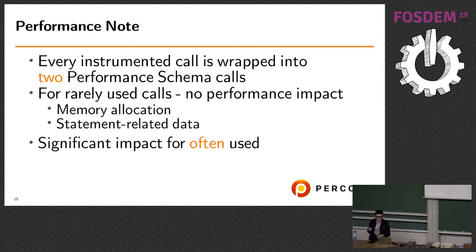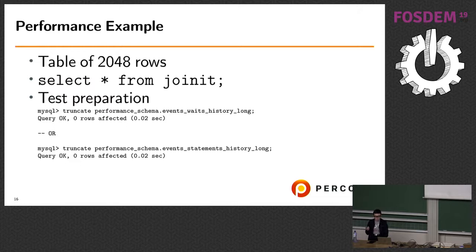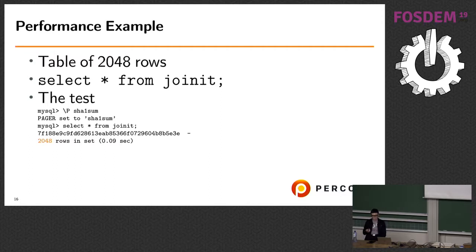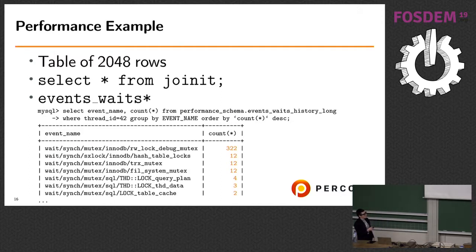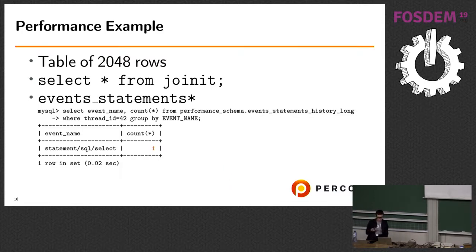For infrequently called operations like statements or memory allocation, the two low-level Performance Schema calls have almost no performance impact. But for high-frequency operations — like reading one million rows — the instrumentation code runs for every single row. For example, in a benchmark with a table of 2,000 rows, instrumenting events_waits shows very large numbers of instruments and is expensive because it triggers so often. But instrumenting statements — getting statistics like whether an index was used — is not expensive.